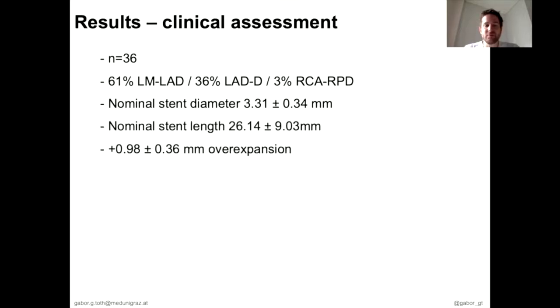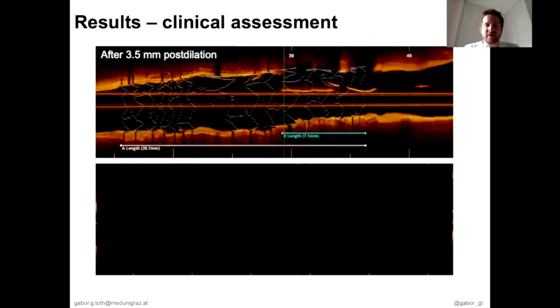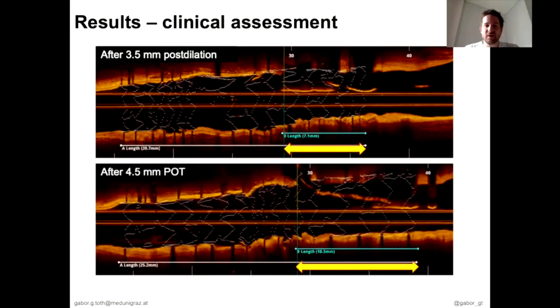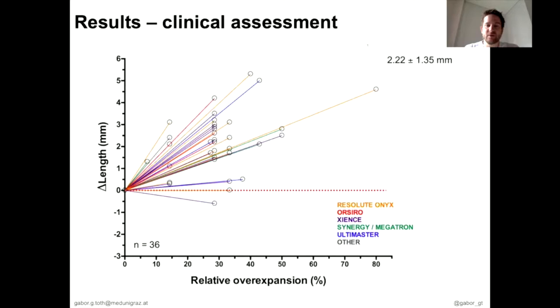A typical case from our cohort involved an LAD-diagonal bifurcation where a 3.0mm stent was first post-dilated with a 3.5mm balloon, and then, to correct proximal under-expansion, was post-dilated with a 4.5mm balloon, resulting in marked lengthening within the proximal main branch segment. In the entire cohort, there was more than 2mm absolute lengthening on average.